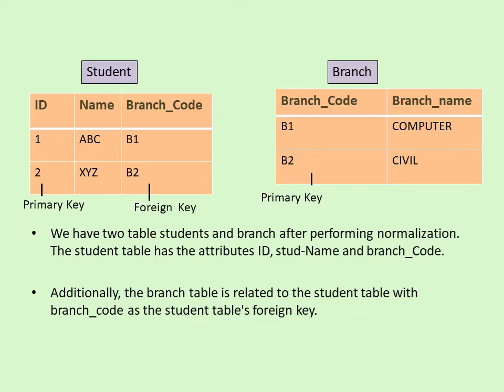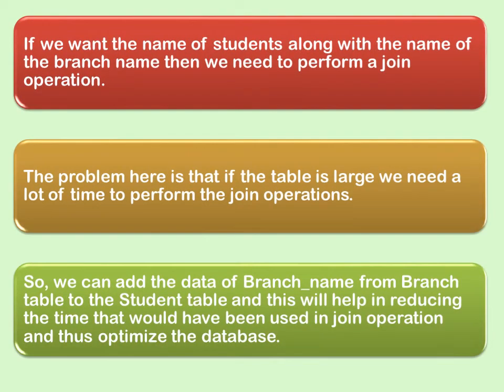One table is student and the second is branch. Now, if you want the name of a student along with the branch name, we need to perform a join operation, because in the student table we only have the name with the branch code. To get the branch name, we have to join both tables.